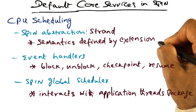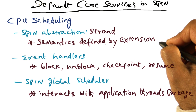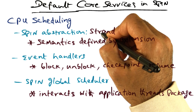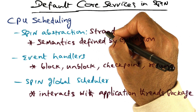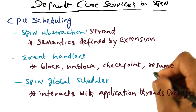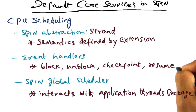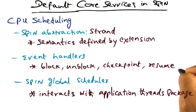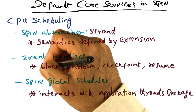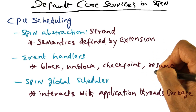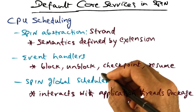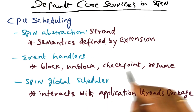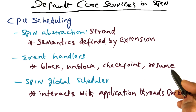For instance, if I am implementing pthreads, I will define the semantics of the strand to be the semantics of the pthread scheduler. There are event handlers that help with the scheduling that needs to happen in the extensions. The kinds of events that Spin provides for this core service of CPU scheduling are block, unblock, checkpoint, and resume.